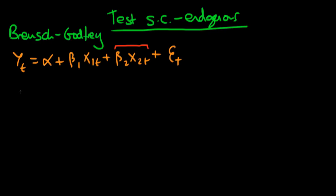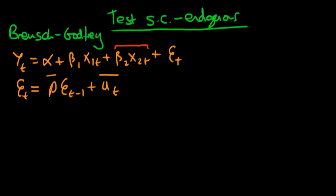We had some AR1 process of errors whereby our errors are related to what they were in the previous period, and the strength of that relationship is given by rho. Our errors in the previous period don't perfectly determine what errors are in the next period, which is why we have this idiosyncratic error u. We talked about how we could test this when we don't have endogenous regressors.